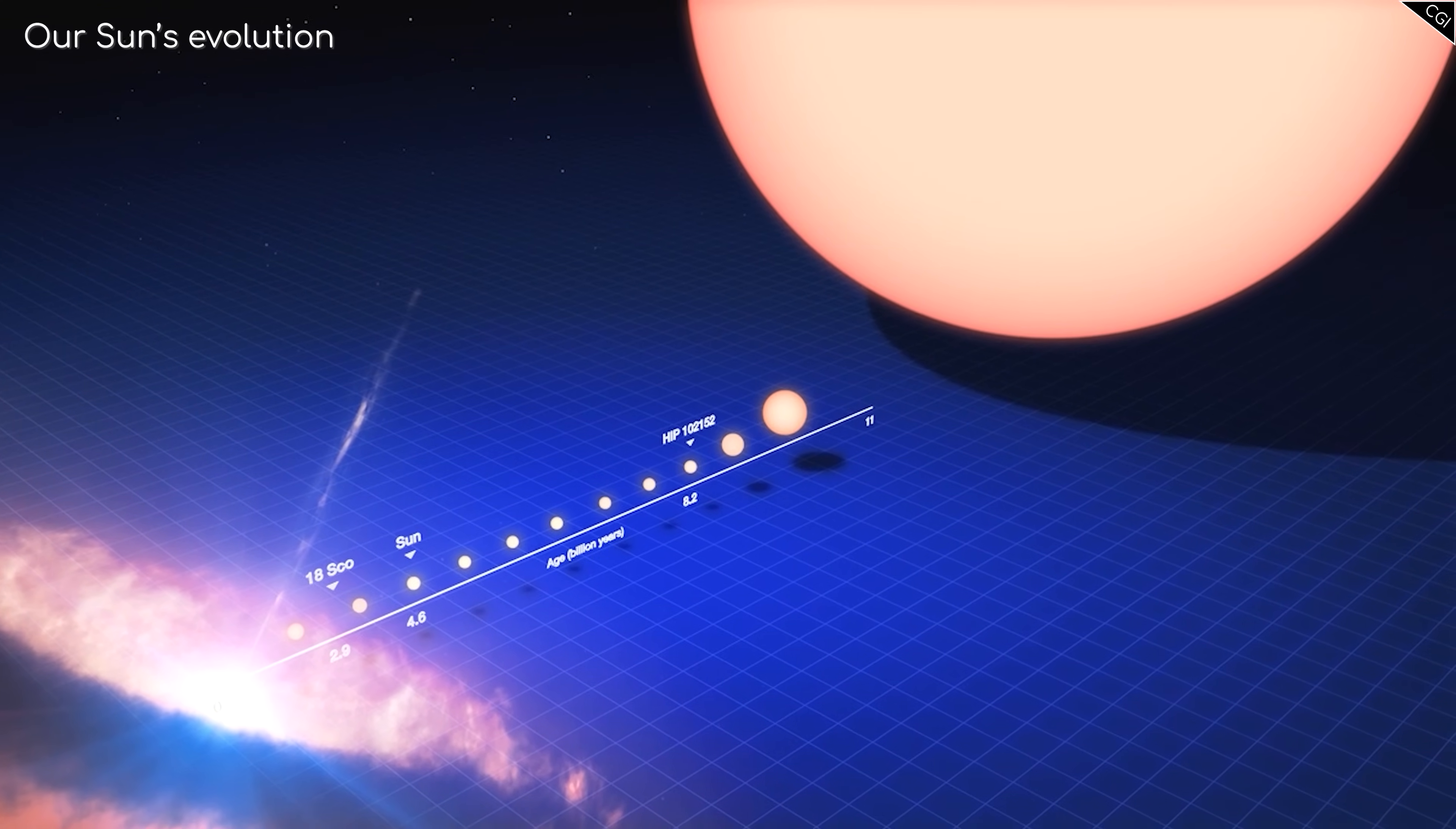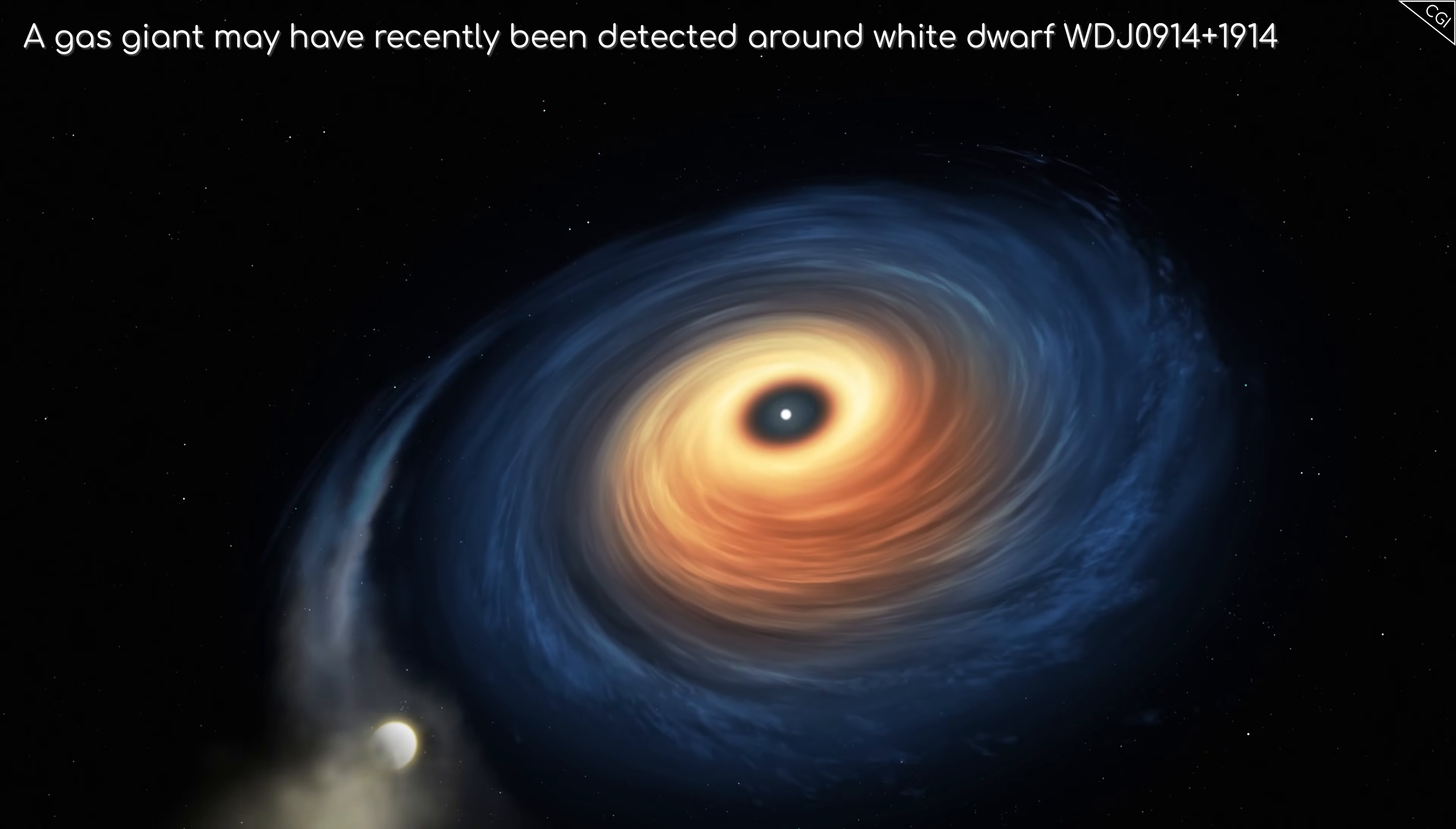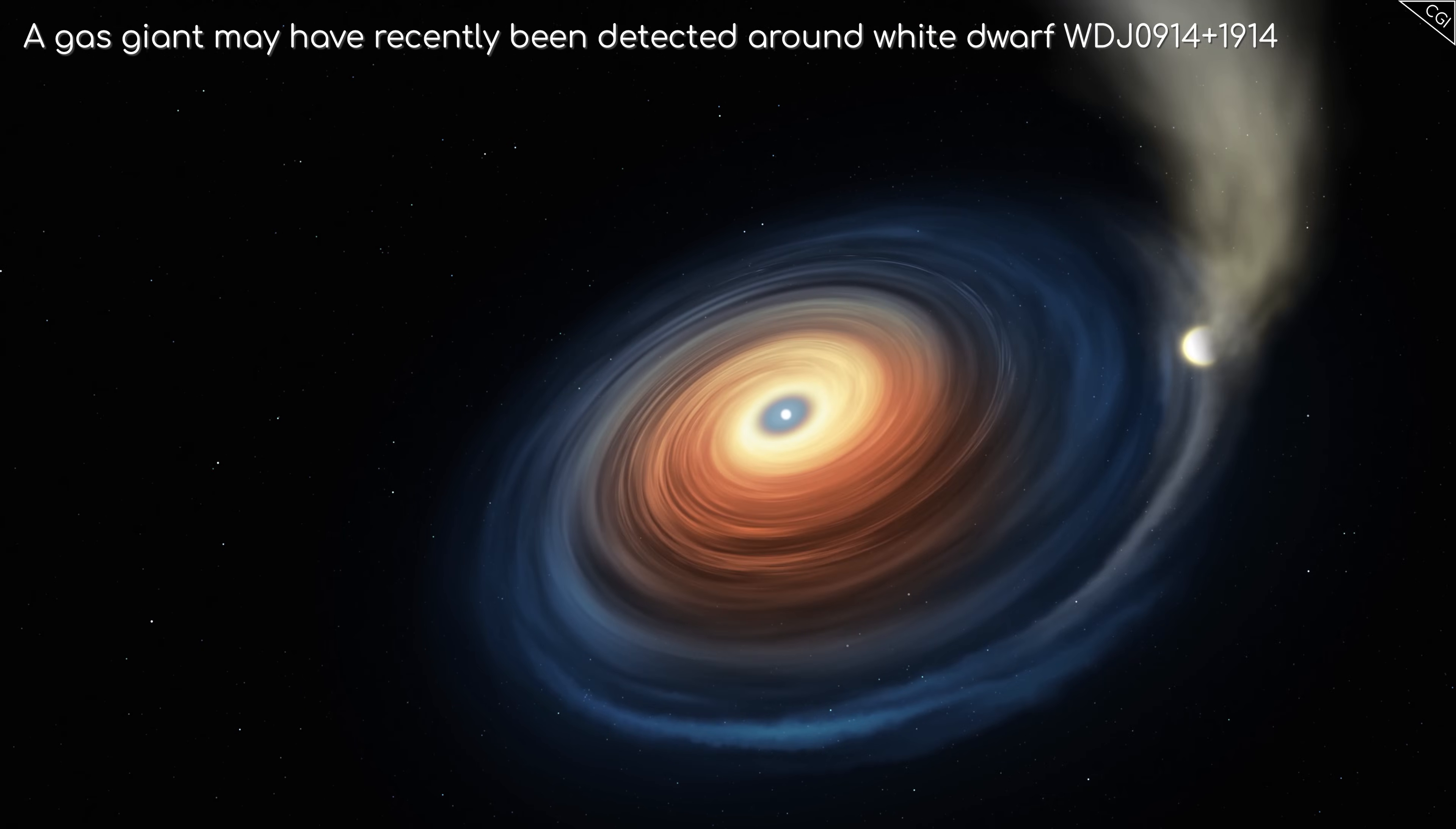Planets that would have survived the star's evolution from main sequence to red giant to white dwarf could well be larger than the small remnant white dwarf, which is typically the radius of Earth. However, due to a white dwarf's dim nature, tiny radius, and lower mass, no such exoplanet has been confirmed, although this doesn't mean that they aren't out there.